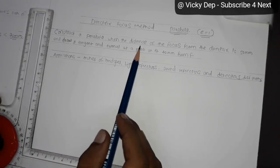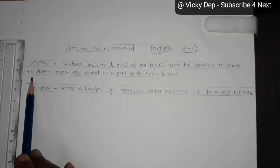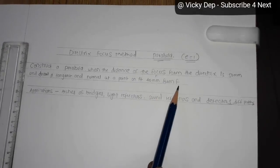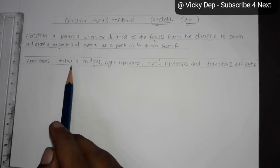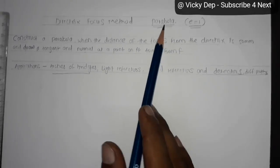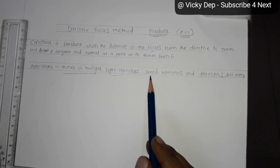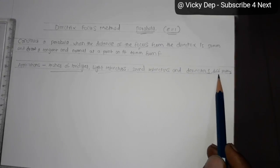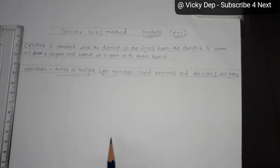How the question comes: construct a parabola when the distance of the focus point from the directrix is 50 mm and draw a tangent and normal at a point on it 40 mm from F. The applications of parabola have many applications. You can see here like in arches or bridges, you may get the curve like parabola. Light reflectors, in light reflectors you will get the path like parabola, sound reflectors and detectors, and different paths have like parabola curve.